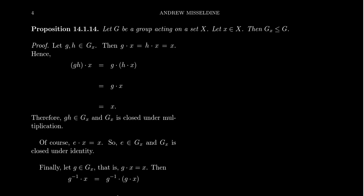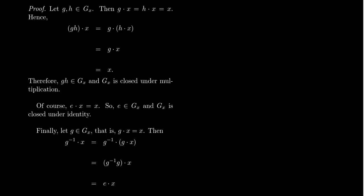The next one is straightforward. What about the identity? The first axiom of a group action is that the identity stabilizes everything. Therefore the identity will belong to G sub x for any x whatsoever. So G sub x always contains the identity — it's closed under identities.